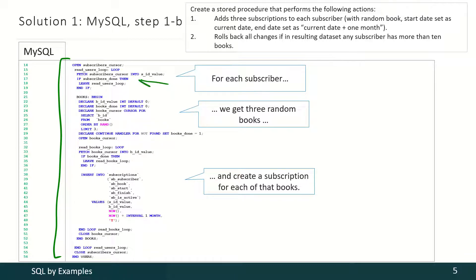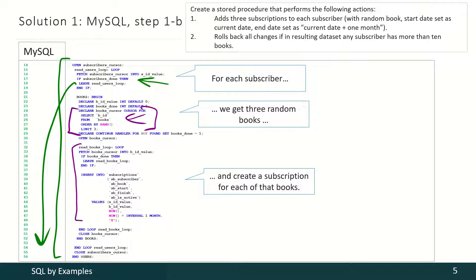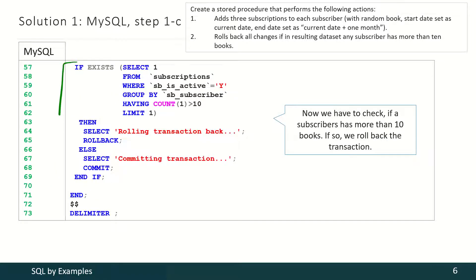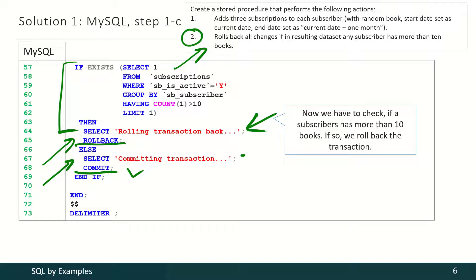Inside the loop we have to check if any subscriber is left. If there are no subscribers left, that means we've processed all subscribers and we have to leave the loop. Otherwise we have to declare the cursor to select 3 random books. Then for each of those books we have to perform the insert operation to create a subscription for a subscriber with a random book. Finally, we have to check for the condition from the second point of the task. If that condition is violated, we have to roll back the transaction, and if that condition is met, we have to commit the transaction. And we have to print the debug messages.